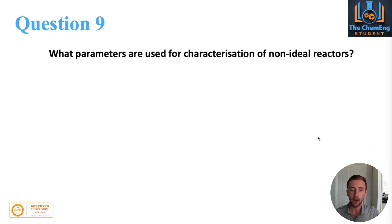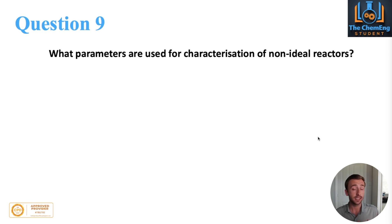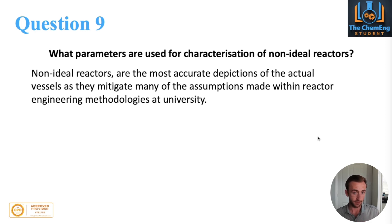Question number nine is: what parameters are used for characterisation of non-ideal reactors? This is getting into the more advanced types of questions for reactor engineering. When we talk about CSTRs, adiabatic, and non-isothermal conditions, we're still dealing with ideal to semi-ideal reactors. Non-ideal reactors are the most accurate depictions of real vessels, mitigating many assumptions. You probably won't come across these until your final year of chemical engineering.